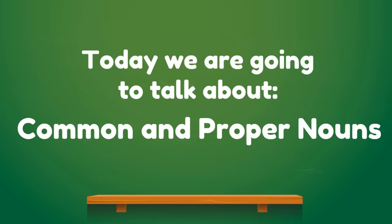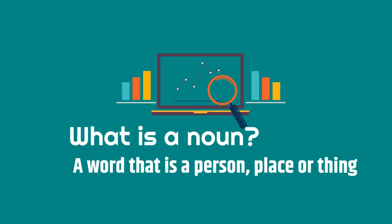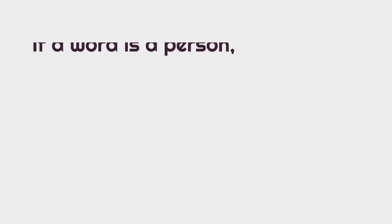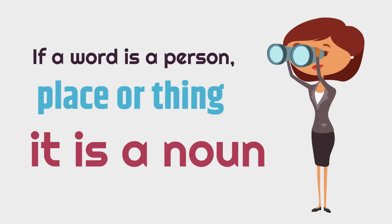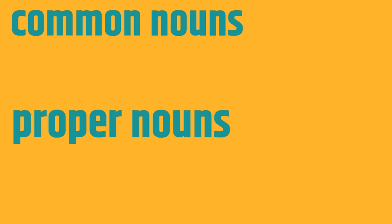Today we're talking about common and proper nouns. But before we learn that, we have to know what is a noun. A noun is a word that is a person, place, or thing. In other words, if a word is a person, place, or thing, it is a noun. You may not realize this, but there are two types of nouns: common nouns and proper nouns. By the end of this video, you're going to know the difference and be able to spot them and figure out which kind of noun a noun is.